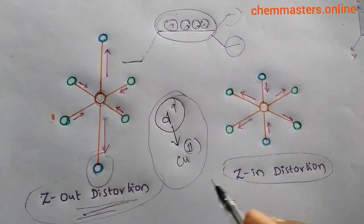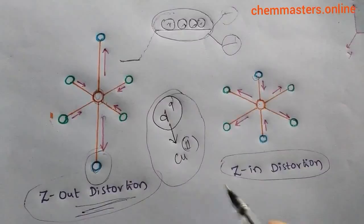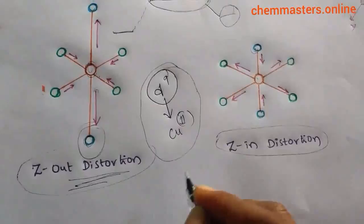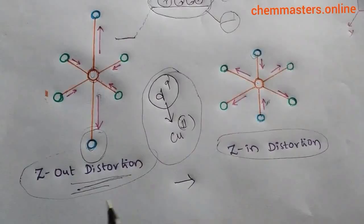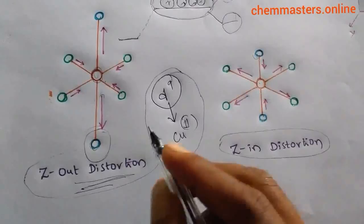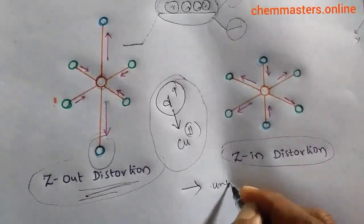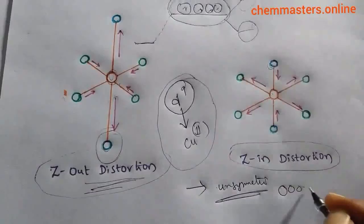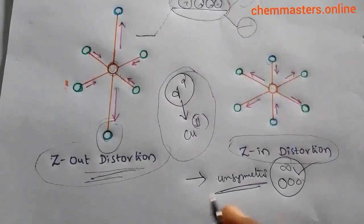Now we are going to discuss a complete explanation of these distortions from D1 to D10 electronic configurations of transition metals. Distortions are possible in the geometry — that means in the orbitals of transition metals — if the electrons are occupied in the orbitals unsymmetrically. If electrons are arranged unsymmetrically in the orbitals, then the complex undergoes distortion.